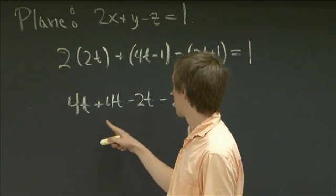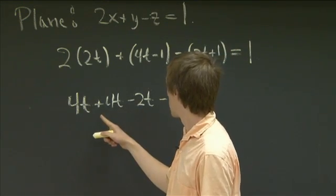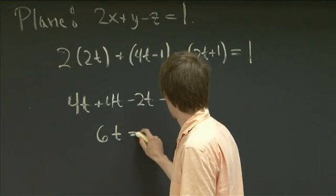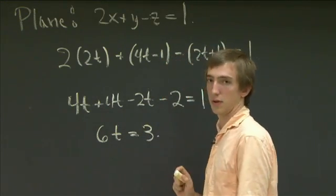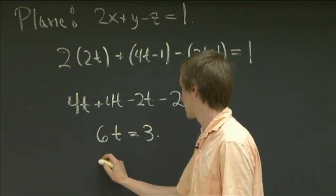So all together, we get 6T equals 3. So that tells us that T is 1 half.